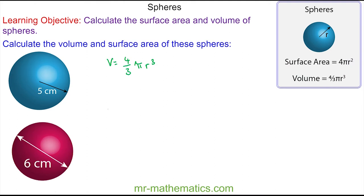We'll begin by working out the volume. The radius this time is half the diameter, so the radius will be 3 centimeters. The volume is four-thirds of π multiplied by 3 cubed. We can simplify this by cancelling the division by 3 with a factor of 3 in the power, so this becomes 3 squared.